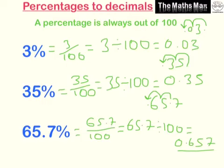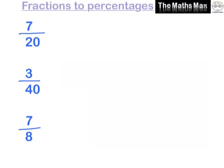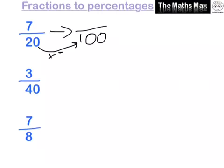Next, we're going to change fractions to percentages. Since a percentage is out of 100, we make these fractions out of 100. For 7 over 20: to get from 20 to 100 we multiply by 5, so we do the same to the top — 7 times 5 is 35. So 35 out of 100 is 35%.